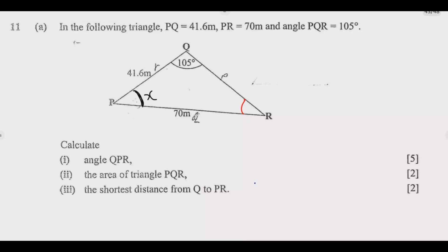The question is asking us to find or calculate QPR, which is this angle. I'll call this angle X. So we are looking for X. Let me call the other angle Y. So X plus Y plus 105 degrees must equal 180. We need to use this principle. We can find Y using the sine rule.